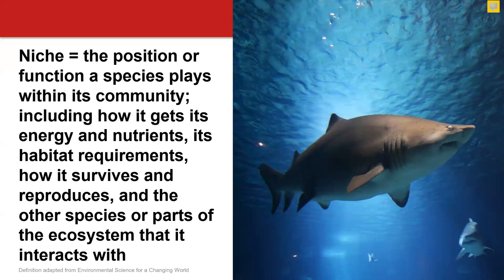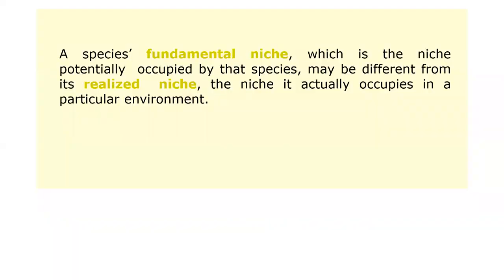We have what we call a fundamental niche and a realized niche. A fundamental niche is the niche potentially occupied by a species — what it can potentially occupy. The realized niche is the niche it actually occupies in the environment. Many times these are different, but sometimes a realized niche can also equal the fundamental niche.